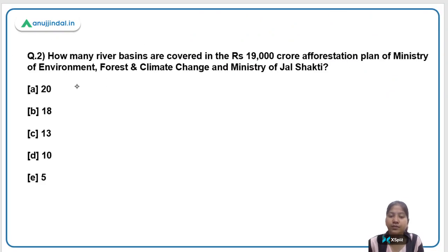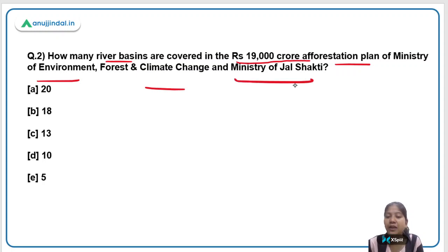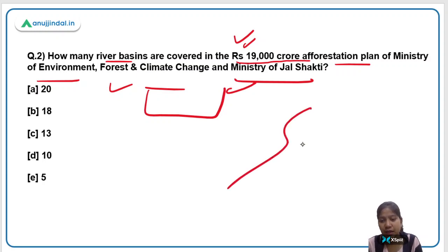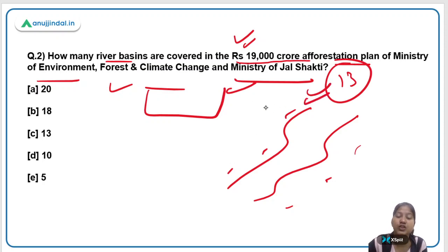Let's move on to the second question: How many river basins are covered in the Rs. 19,000 crore afforestation plan of the Ministry of Environment, Forest and Climate Change? These two ministries have collaboratively launched this afforestation plan. They will afforest the basins of rivers — 13 major rivers have been selected — so the right answer is 13.